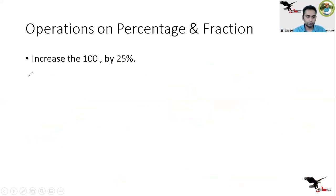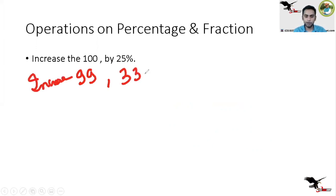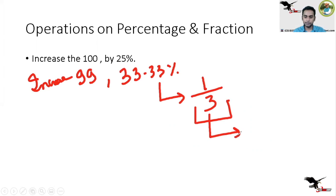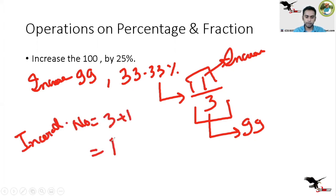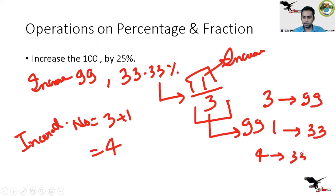Let's apply this to: increase 99 by 33.33%. Since 33.33% equals 1/3, I consider 3 as my original number (representing 99) and 1 as the amount of increment. So my increased number is 3 + 1 = 4. Since 3 equals 99, the value of 1 unit is 33. Therefore, the value of 4 is 4 × 33 = 132.